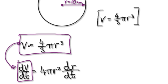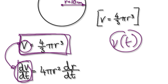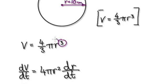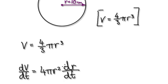That will then give you... Because v is a function of time, remember we are differentiating with respect to time. Because v is a function of time, we do need to stick dv/dt in here. Then differentiate as normal, bearing in mind that the radius is a function of time. So when you differentiate the radius, you do need to stick dr/dt in here. And this is what we want to know.